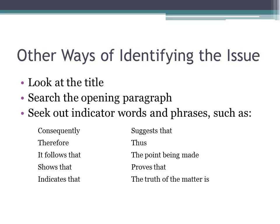Other ways to identify an issue when reading: look at the title, search out the opening paragraph, and seek out indicator words and phrases. These are rhetorical clues for the reader or listener to identify what the person is actually talking about. It sounds simple, but sometimes with reading assignments you can get bogged down in vocabulary, terminology you don't understand, and just the way that things are written.